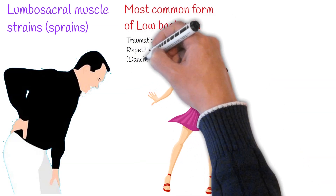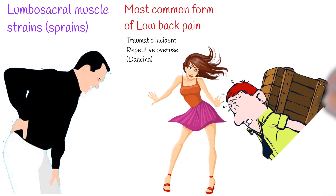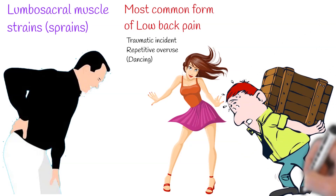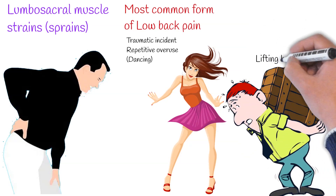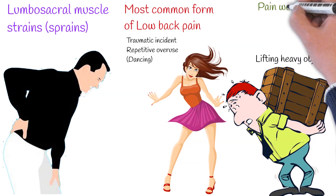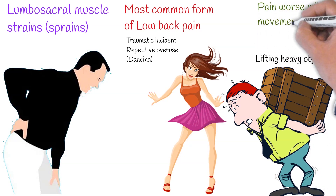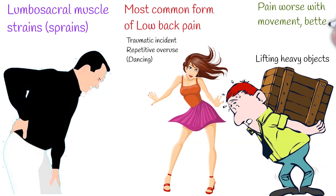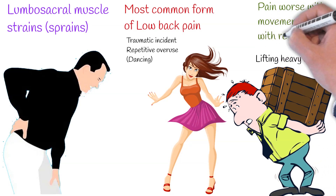Muscle strains and tears most frequently result from a violent muscular contraction during an excessively forceful muscular stretch from lifting heavy objects or sudden twisting motions. Pain is worse with movement and better with rest, with restricted range of motion and tenderness to palpation of muscles.